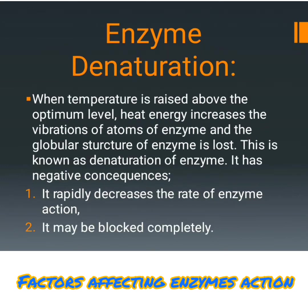Another term, enzyme denaturation, is also explained under the factor of temperature. When temperature rises above the optimum level, heat energy increases the vibration of atoms of the enzyme and the globular structure of the enzyme is lost — this is known as denaturation. Its negative consequences are: it rapidly decreases the rate of enzyme action, and the reaction may be blocked completely.